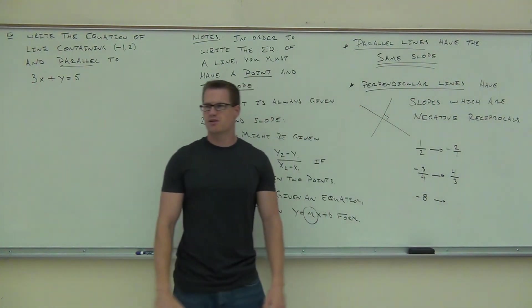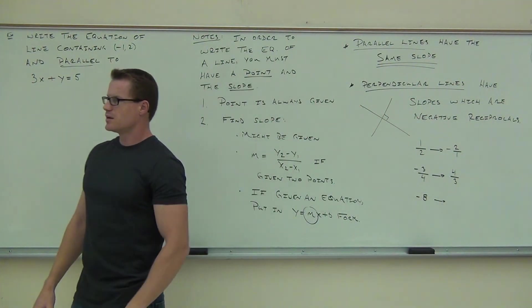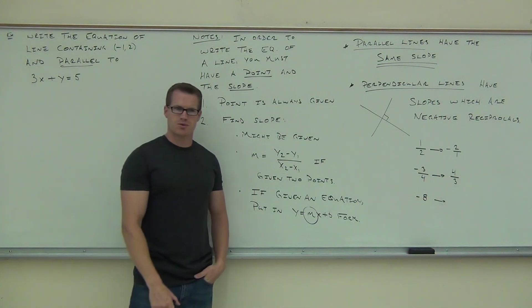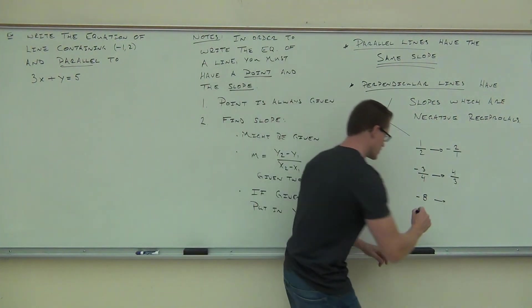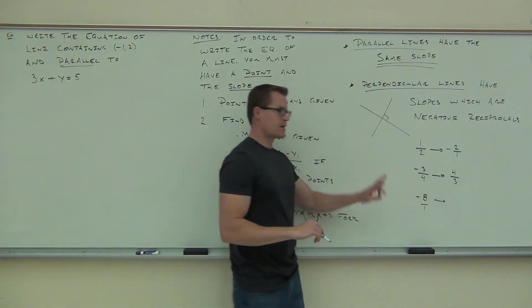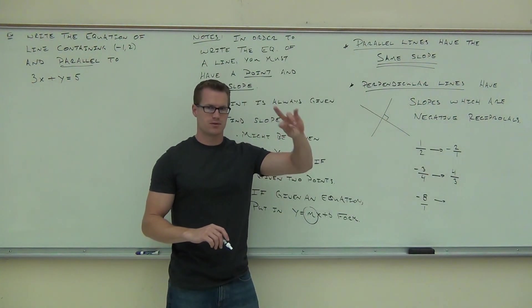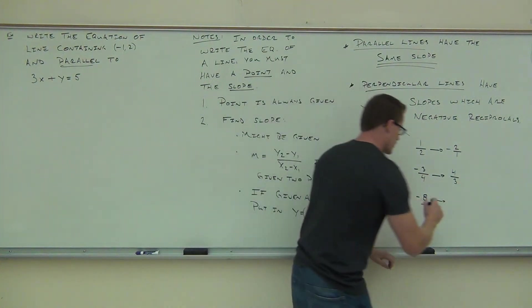Now wait a second. What if I just give you a number like negative eight? Can you still find the negative reciprocal of negative eight? Okay, so we do make the fraction out of it. Very good. And then like you said, we're just going to flip that thing around. So positive one-eighth is our answer.